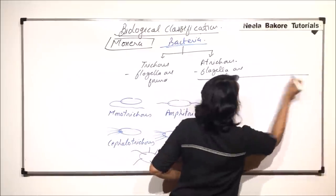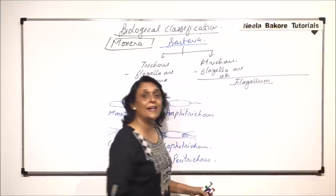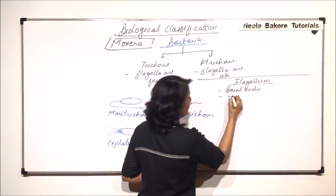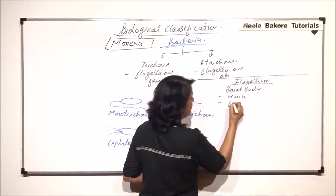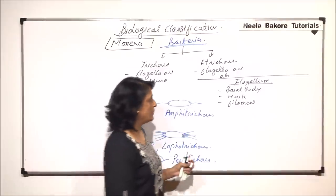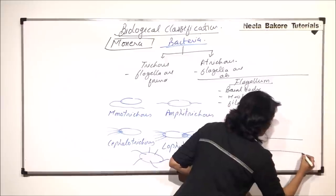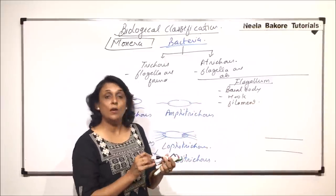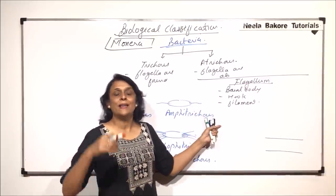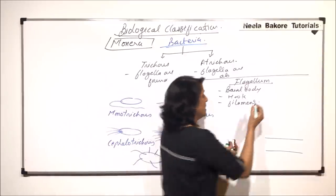If we are talking about the flagellum — singular is flagellum — it has three parts: a basal body, a hook, and a filament. These three things make up the flagellum. The basal body — if we talk about the membrane of the bacteria or the wall, which includes the cell wall and the plasma membrane — the basal body remains embedded into this membrane.